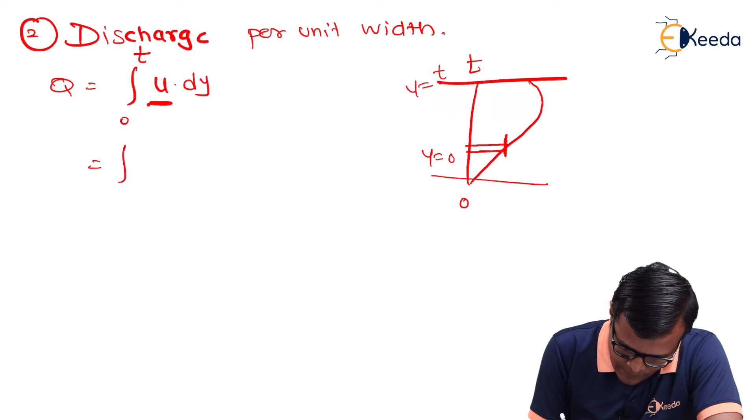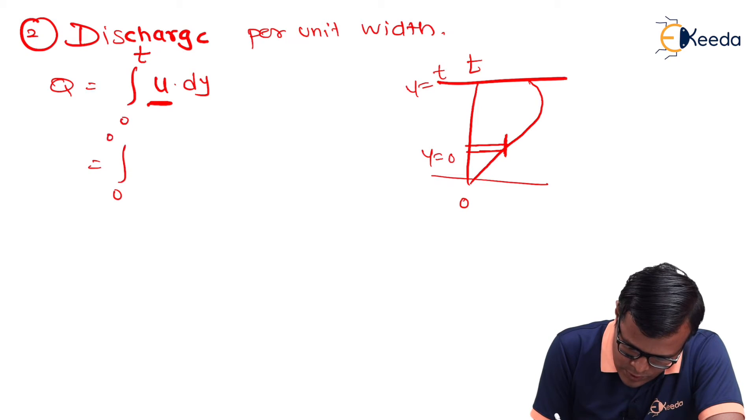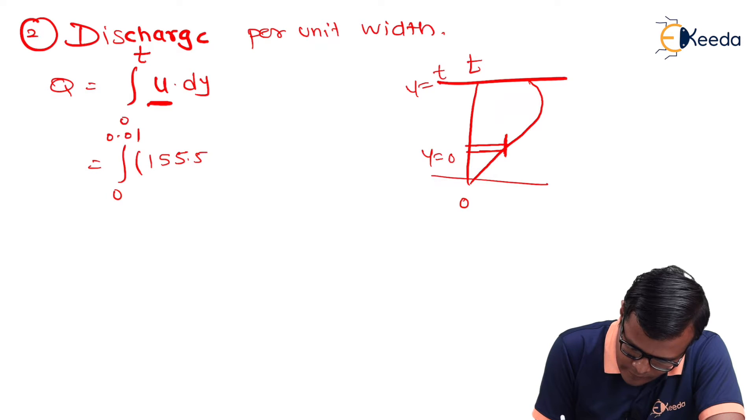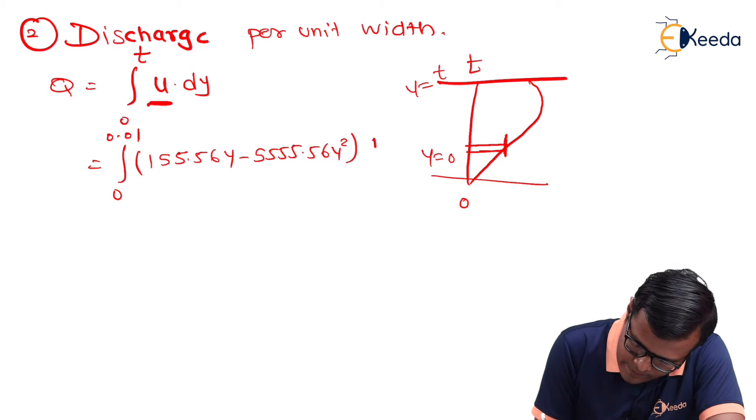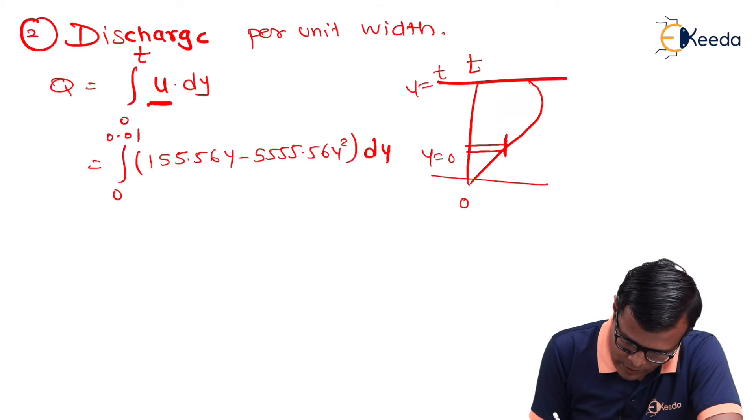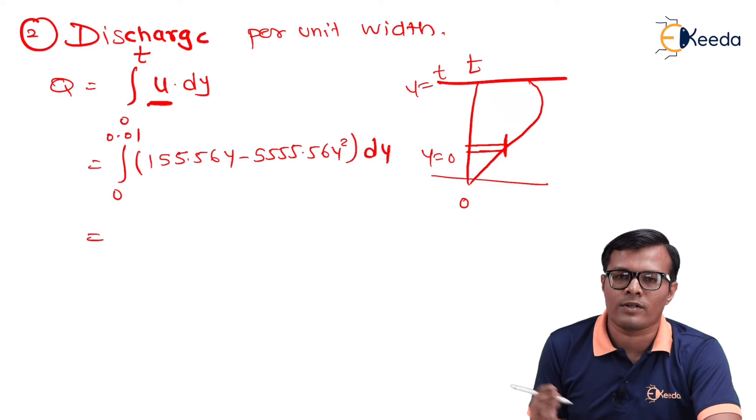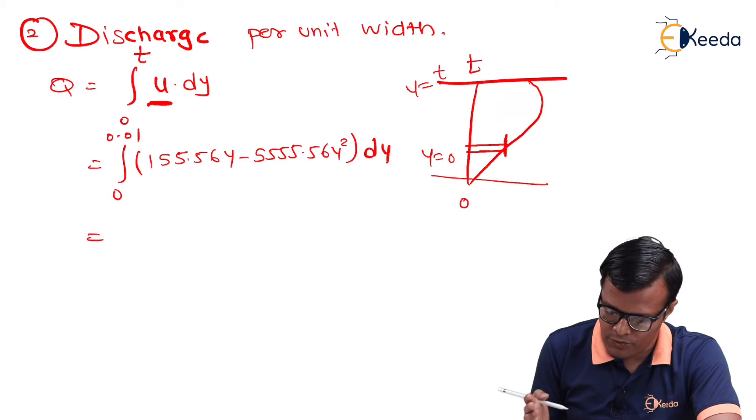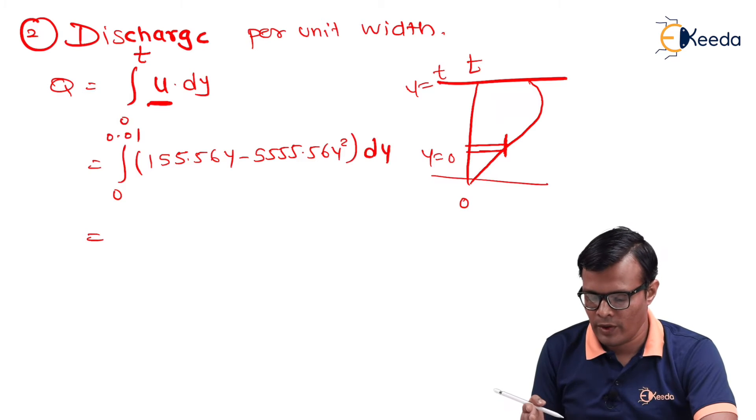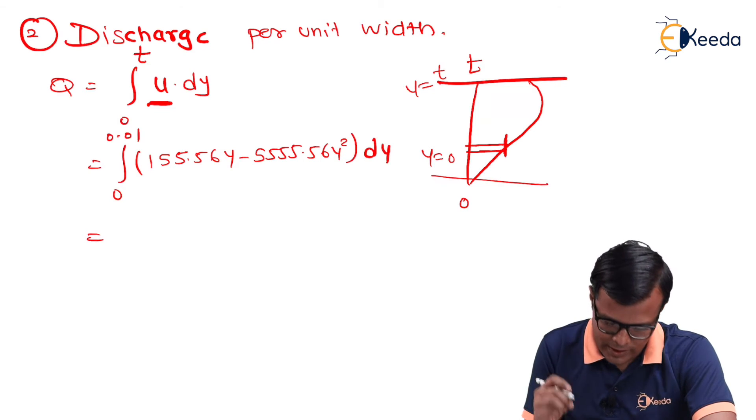We will start with actual integration because now we know the distribution of u with respect to y. We are having an equation in ready format. So, just considering 0 to 0.01, thickness is 0.01, relation of u is 155.56y - 5555.56y²·dy. Now it is easy for us to calculate the integral values. y becomes y²/2 and y² becomes y³/3.